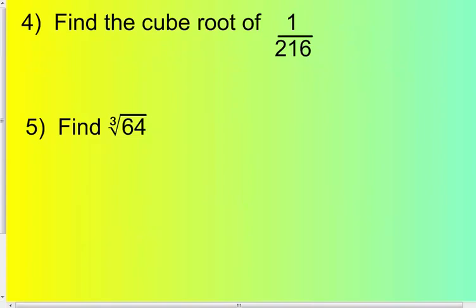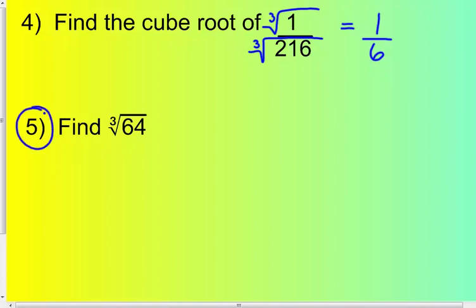Number 4: find the cube root of 1 over 216. You can take the cube root of each part separately. The cube root of 1 is 1, because 1 times 1 times 1 is 1. And 6 times 6 is 36, times 6 more is 216, so the cube root of 216 is 6. Therefore, the cube root of 1 over 216 is 1 sixth. Now try to find the cube root of 64 on your own — either use your calculator or find the number that, multiplied by itself 3 times, gives you 64.